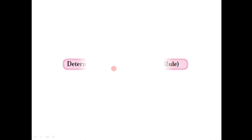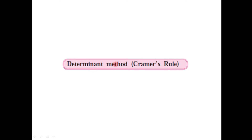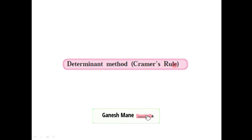Hello friends, in today's video let us try to understand what is the determinant method for the solution of linear equations in two variables, which is also called as Cramer's Rule.